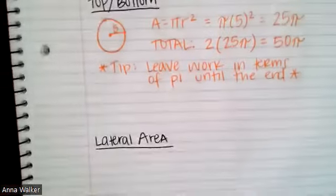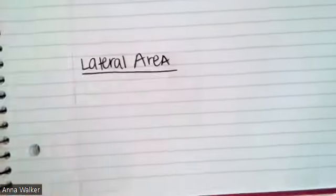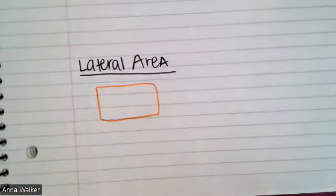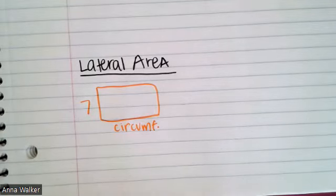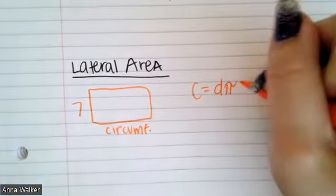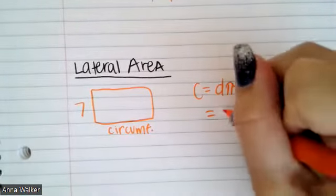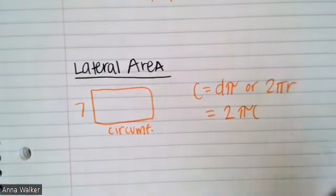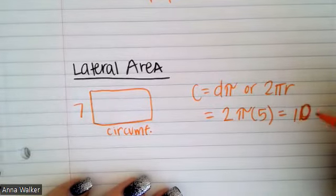The first thing we need to find for the lateral area is the circumference of the circle, because that gives us the length measurement of the rectangle. Then to find the total area of the rectangle, we'll multiply the circumference by the height of seven. The circumference formula is either diameter times pi, or two pi times the radius. Since the radius is five, the circumference is two times pi times five, which equals 10 pi.